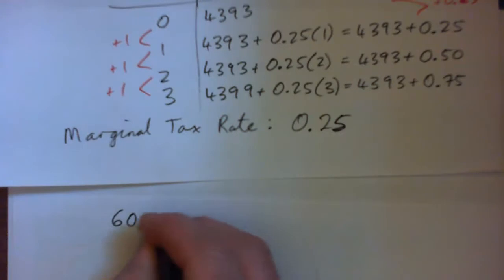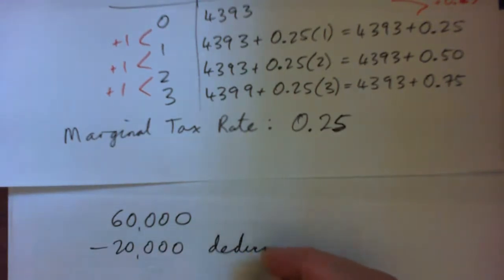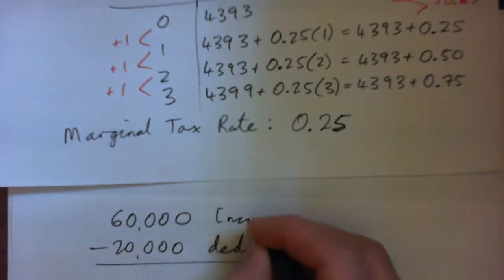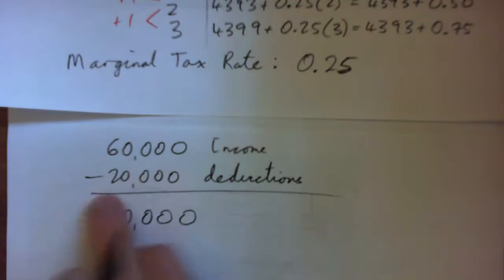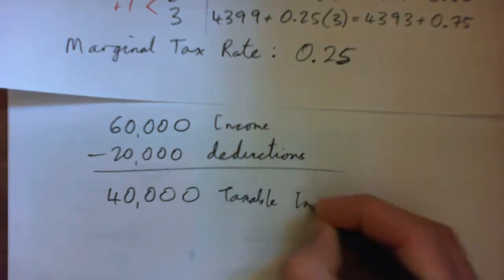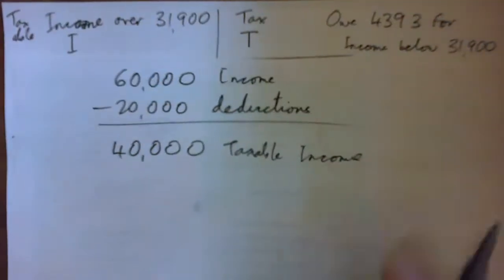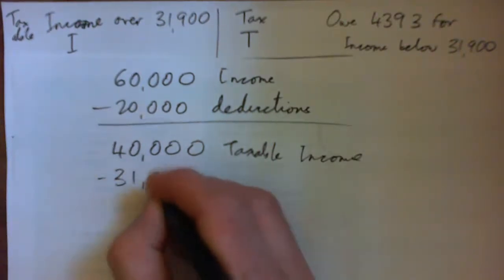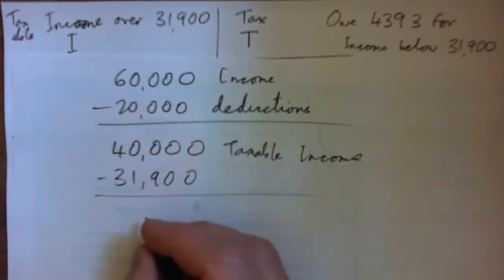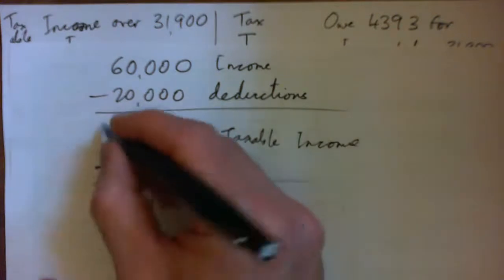For example, your income might be $60,000, and then you subtract, say, $20,000 in deductions — so your taxable income is $40,000. This problem is about taxable income over $31,900, so you subtract $31,900 from $40,000 and you get $8,100 over the threshold.